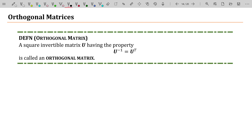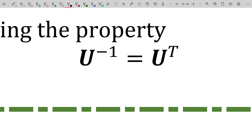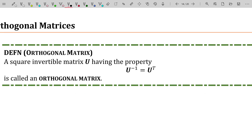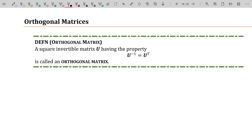What is an orthogonal matrix? A square invertible matrix U having the property that U inverse is equal to U transpose is called an orthogonal matrix. Right now you may not know why you would call that an orthogonal matrix. For now, we're just going to say: if you have a square matrix such that the matrix inverse equals the matrix transpose, we reserve the phrase 'orthogonal matrix' for that style of matrix. Before we go into why it's called that, let's take an example and show that a given matrix is orthogonal.